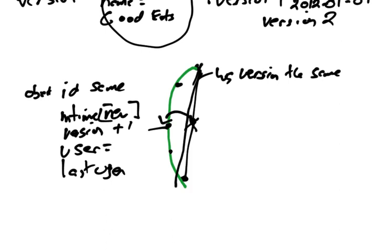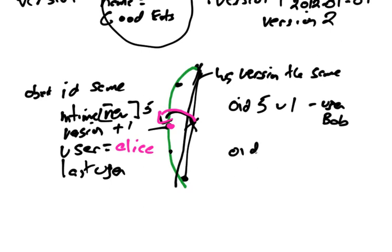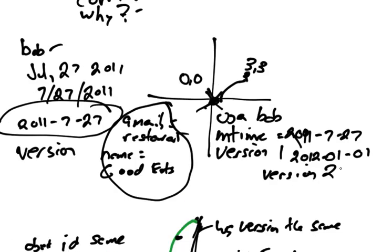It's the last user. So if instead of Bob, Alice did this, so Alice made this change, the user would not be Bob, but it would be Alice. And that's important. So we can go back in history and we can see this object ID. Let's say this is object 5. So object 5, version 1, user was Bob. But object ID 5, version 2, user was Alice. And that's important. Because basically any user can change any object in OpenStreetMap.